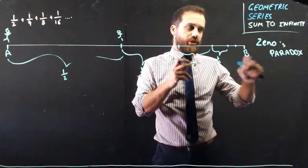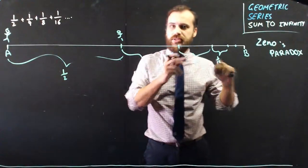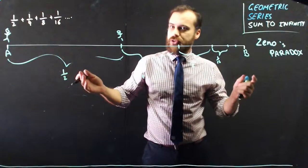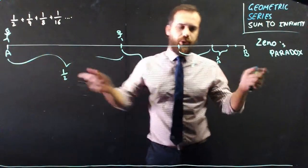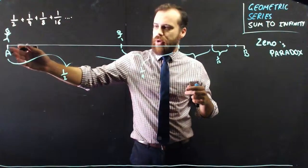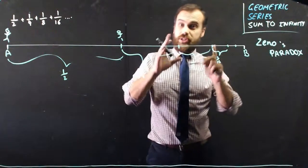Now, the reason it's called a paradox is because Zeno's saying, to walk across a room, to run from point A to point B, you have to cover all of these things, which is impossible, because you have to pass through an infinite number of points.